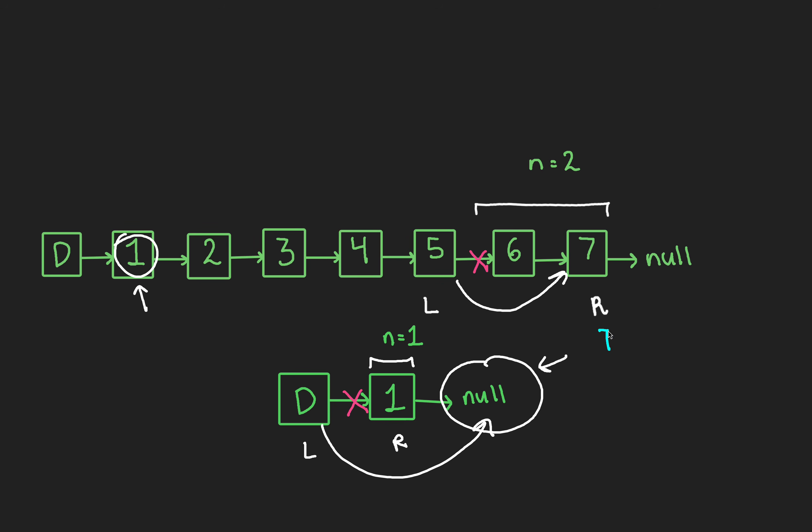The time complexity has been reduced to a single big O n, where n is the number of nodes, and the space complexity is big O of 1, because we only use two pointers, left and right, as per usual with sliding window problems. Great work. Let's jump into the code.